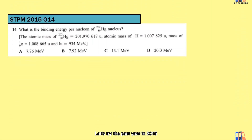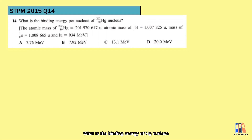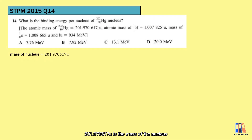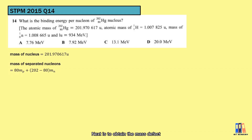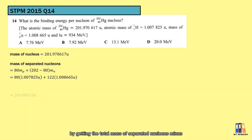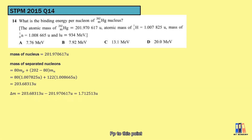Let's try the past year question from 2015: what is the binding energy of the Hg nucleus? The atomic mass given is 201.970617 U, which is the mass of the nucleus. Next, we obtain the mass defect by getting the total mass of separated nucleons minus the mass of the nucleus. Up to this point, the mass defect is 1.712513 U.